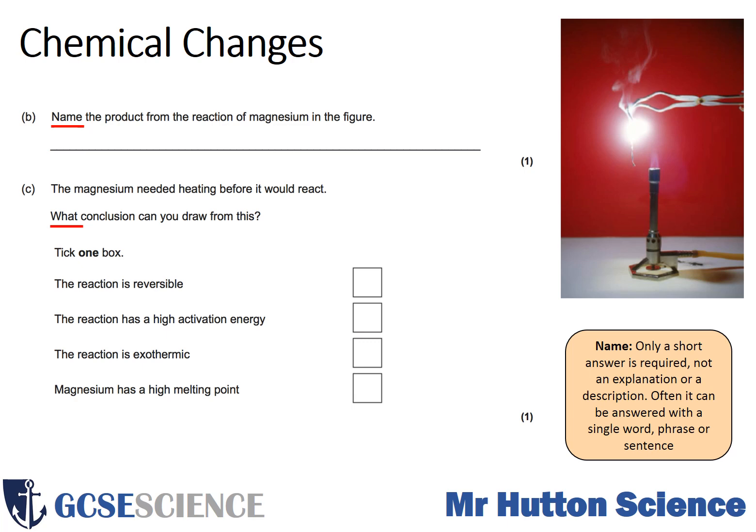For the second part, magnesium needed heating before it would react. You can see in the picture there's a Bunsen burner — you may well have done this at school where you have to heat the magnesium in the flame in order to start the reaction. The options are: reaction is reversible, reaction has a high activation energy, reaction is exothermic, or magnesium has a high melting point. From this diagram you cannot tell if it's reversible or not. The diagram shows that you're having to put energy in to get the reaction started, which is a clue as to what the answer might be.